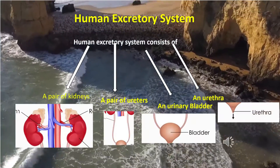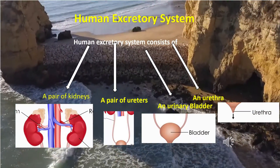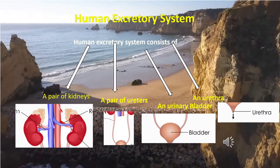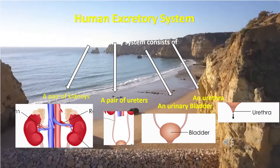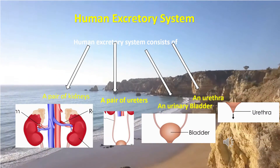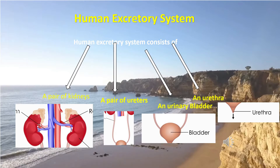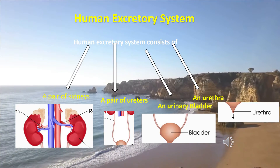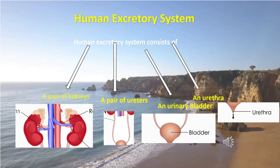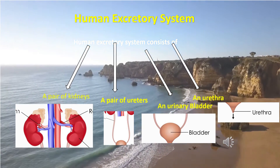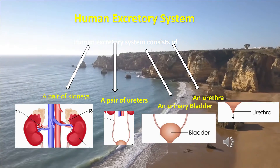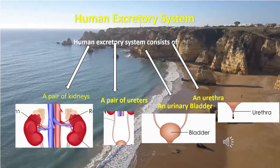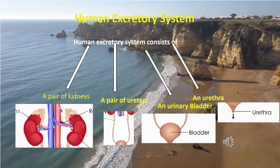The human excretory system consists of a pair of kidneys, a pair of ureters, a urinary bladder, and a urethra. Each part will be studied in detail in the following sections of the video.